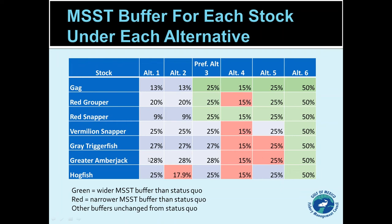Alternative six, the most liberal allowed, would set the MSST level at 50% of BMSY. All of our stocks currently have a narrower buffer than that, so all stocks would go to this broader buffer of 50% from wherever they are under alternative one. The council's preferred is alternative three, which says use the formula but ensure everything is at least a 25% buffer, and if the formula allows a wider buffer, use the formula.